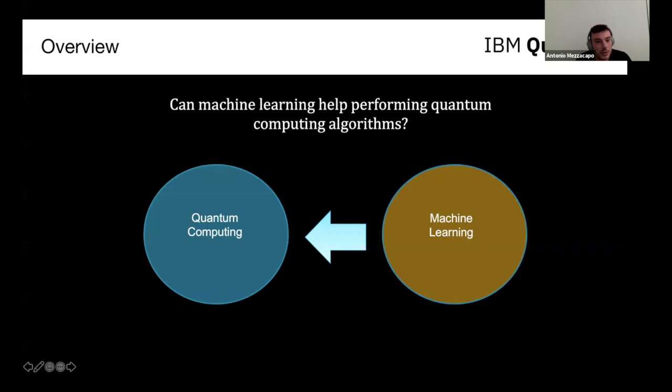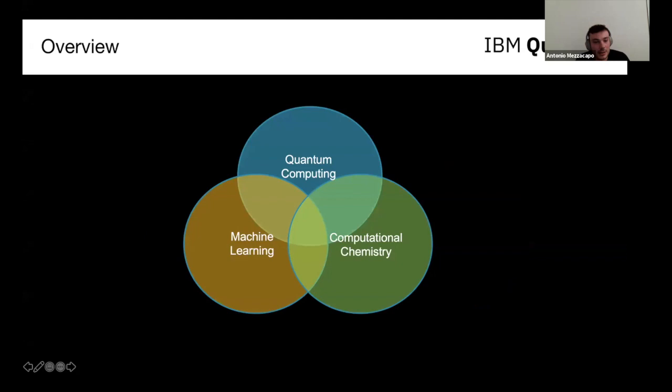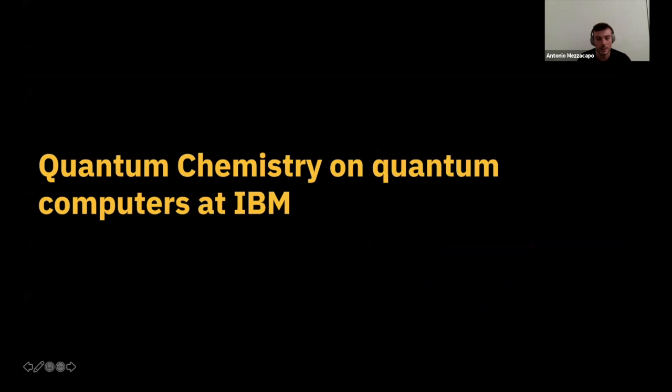What I'm asking here is: can machine learning help quantum computers? This is the philosophy, and then I'm going to take the computational chemistry route to show an application in which machine learning could give a possible advantage to quantum computers. But before getting to the machine learning part, I'd like to give a little introduction on quantum chemistry, on quantum computers, and especially where we stand at IBM.